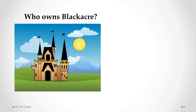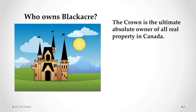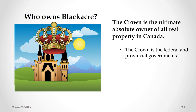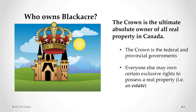Who owns Black Acre? A fact that most people don't realize is that it is the Crown that is the ultimate absolute owner of all real property in Canada. The Crown refers to the federal and provincial governments. Everyone else can only own certain exclusive rights to possess real property, and those rights are referred to as estates. There are a number of different kinds of estates.